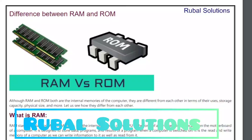We have compiled the playlist section very well. Today's topic of video is Difference between RAM and ROM. Although RAM and ROM both are internal memories of computers, they are different from each other in terms of their uses, storage capacity, physical size and more. Let us see how they differ from each other.